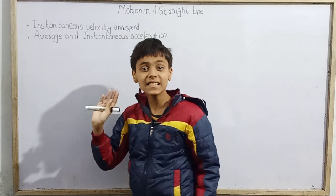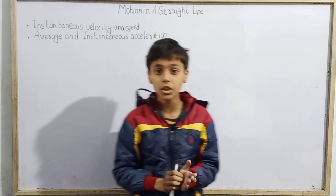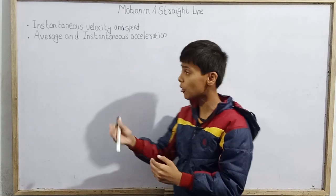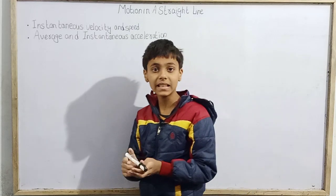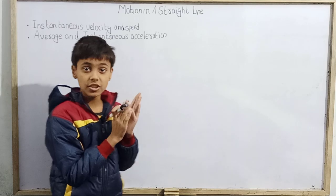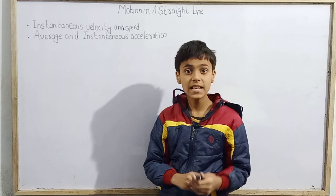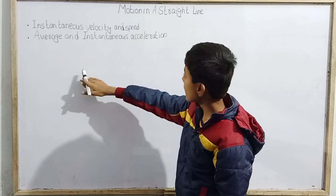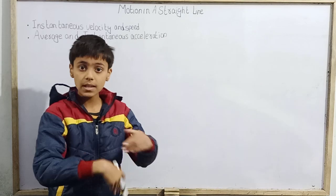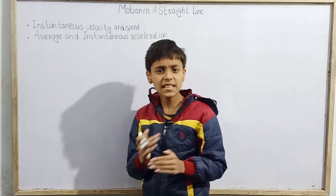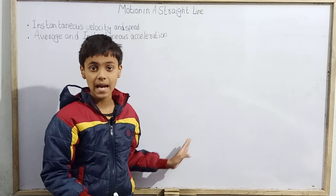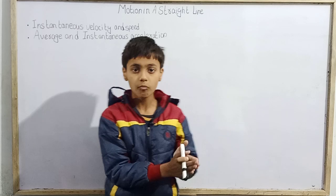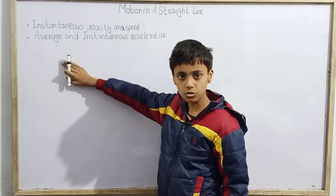Today we are going to resume Motion in a Straight Line. In my previous video we already covered much of it — a little introduction of what motion in a straight line is, distance and displacement, average speed and average velocity. What was left: instantaneous velocity and speed, average and instantaneous acceleration. We'll also cover position-time and velocity-time graphs in later videos, and kinematics equations of motion.